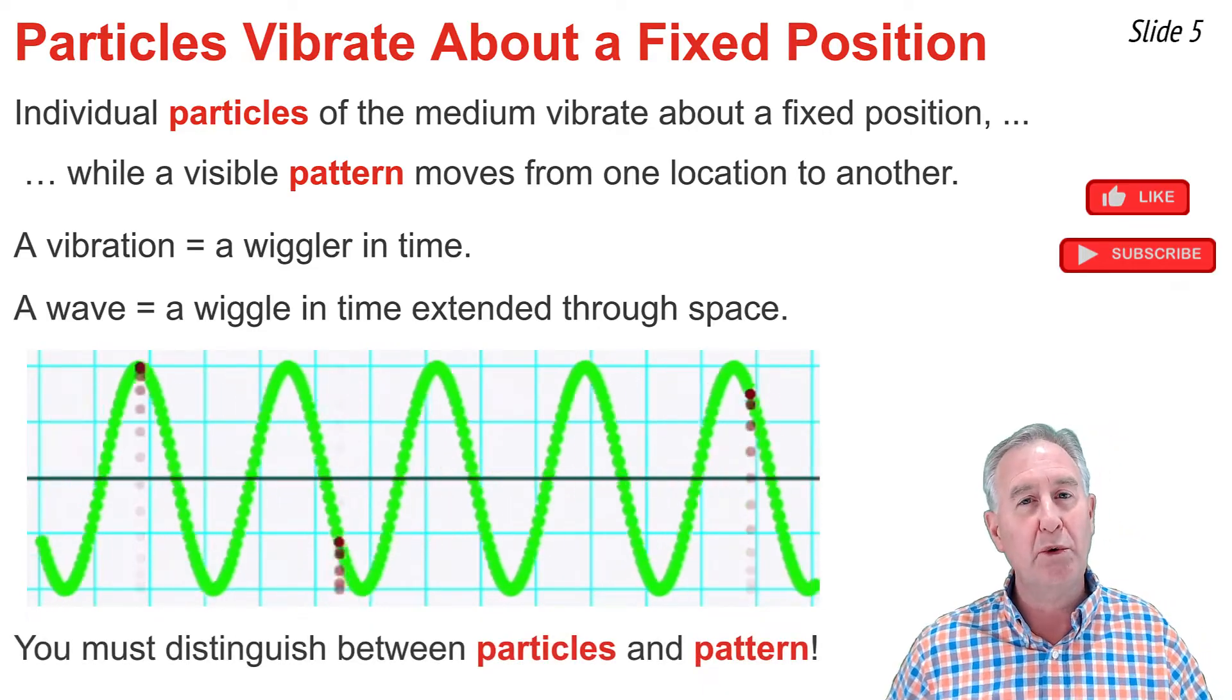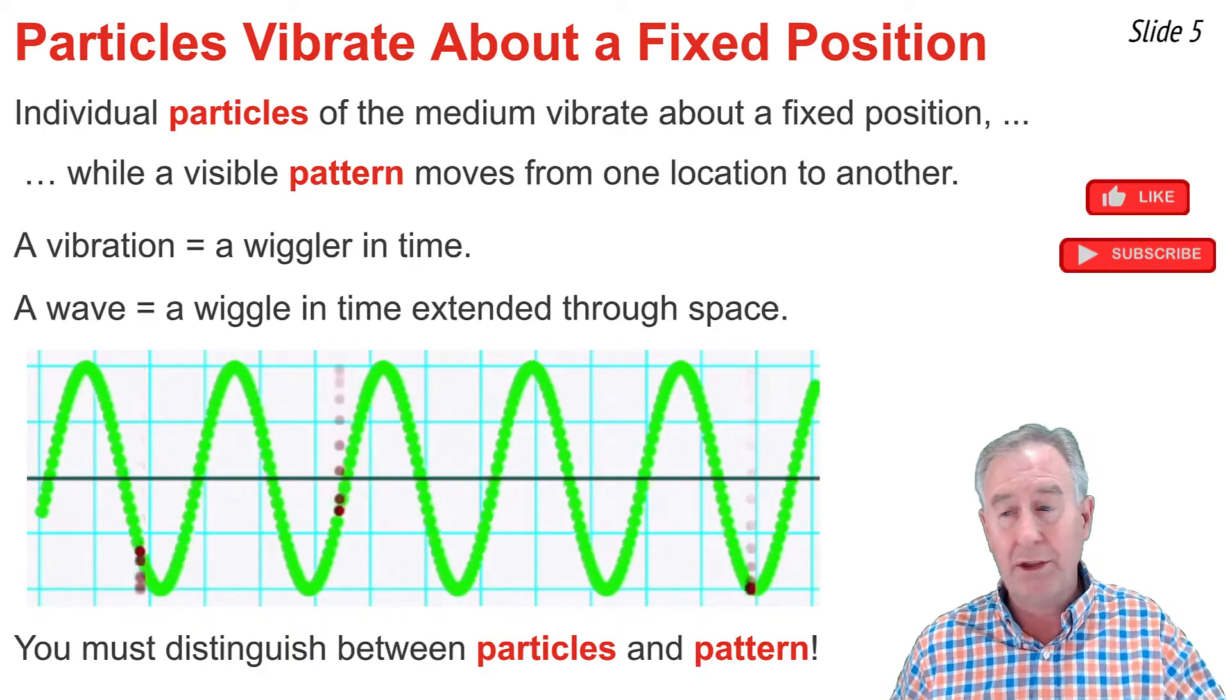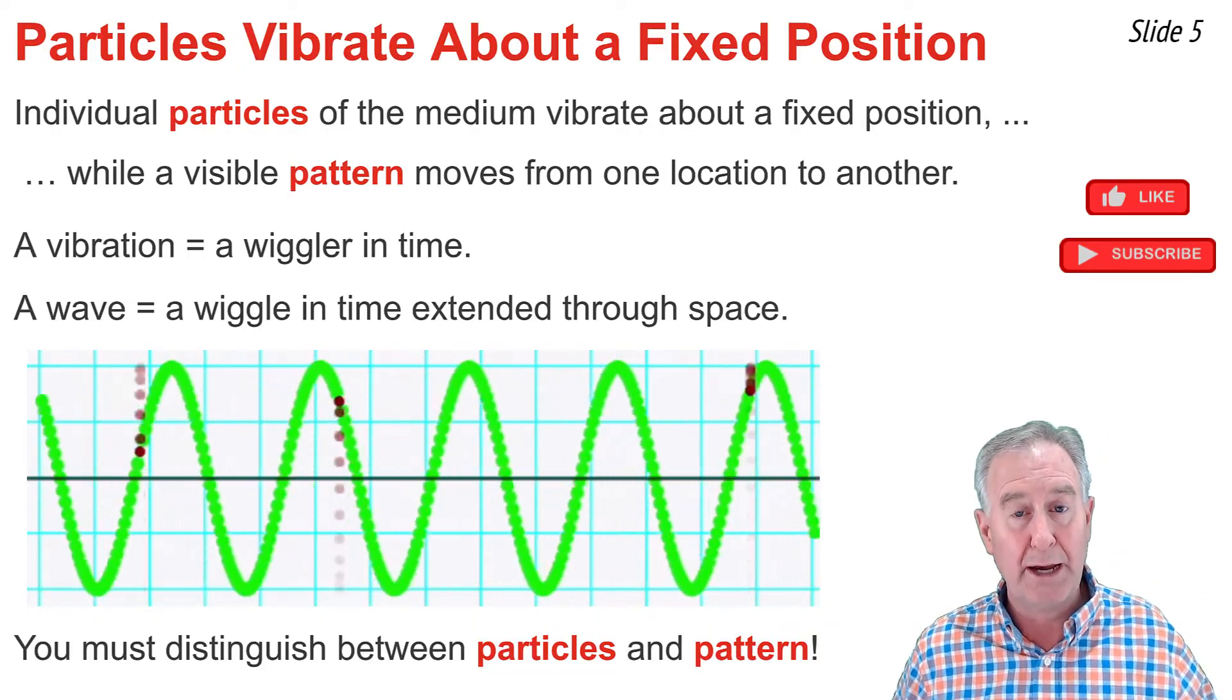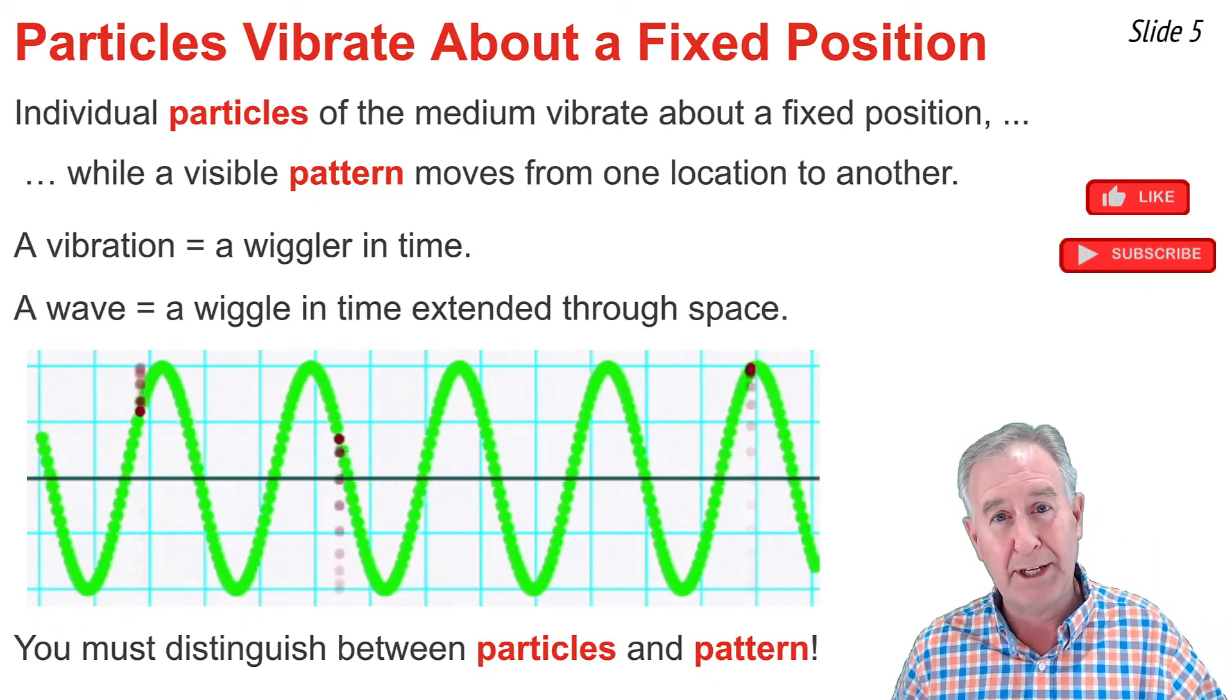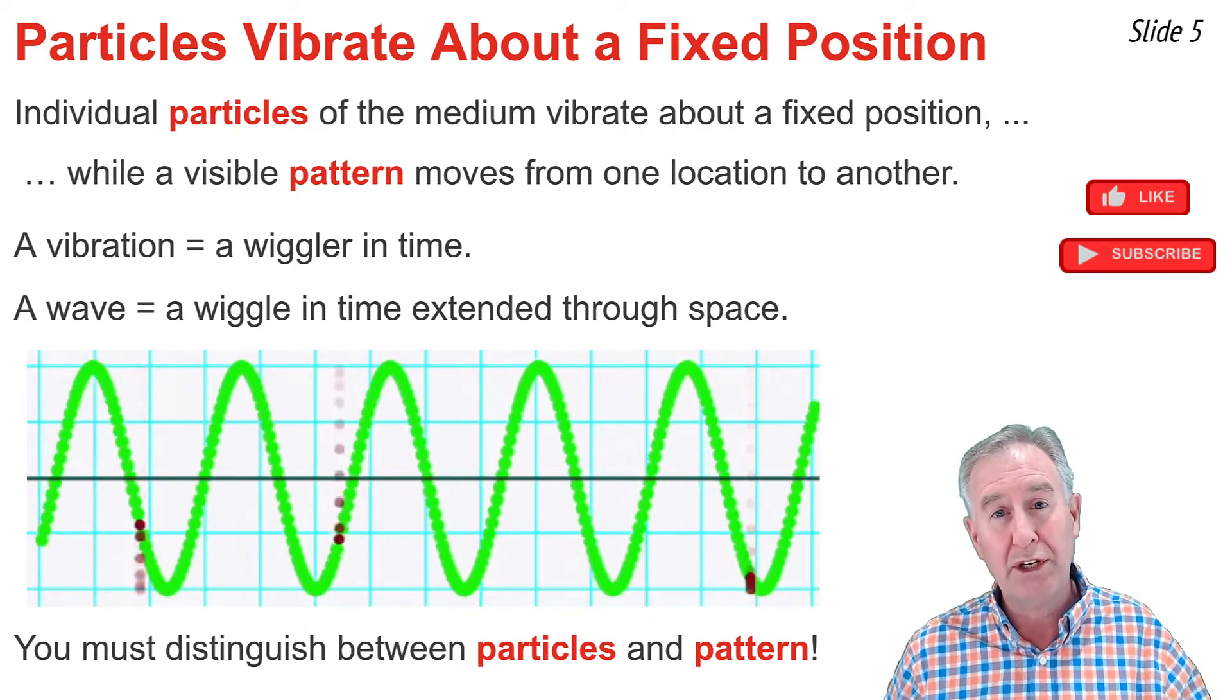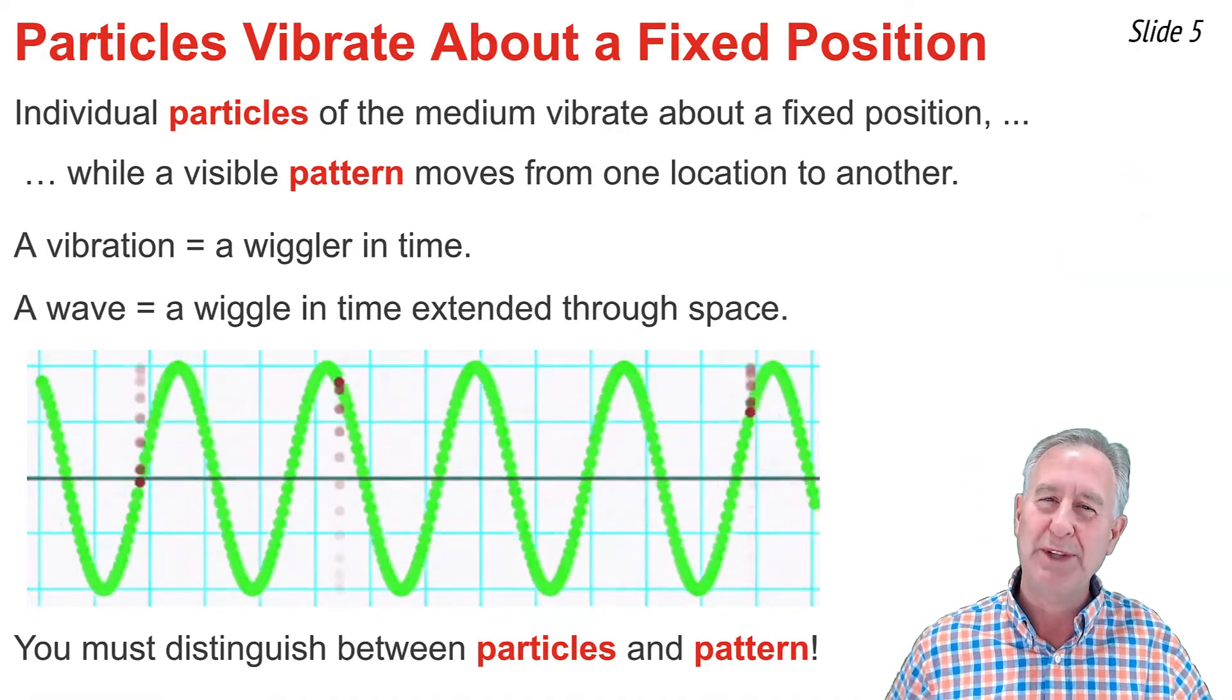In this animation of a simple wave, you see wigglers and you see a wave. The particles wiggle. You can look at the red particles in particular, and notice they're simply vibrating up and down. And then you can look at the pattern that's established of a sine wave with crests and troughs that travel from one end of the medium to the other end of the medium. It's always important to distinguish between particle motion and wave motion, what the particles do, which is to vibrate, and what the wave does, which is to move from one location to the other.